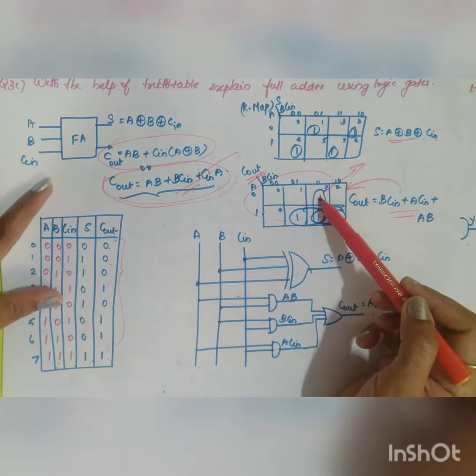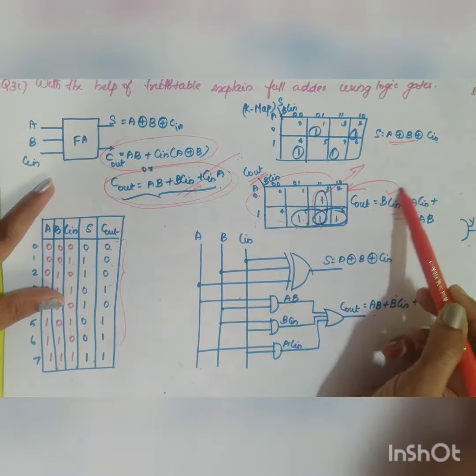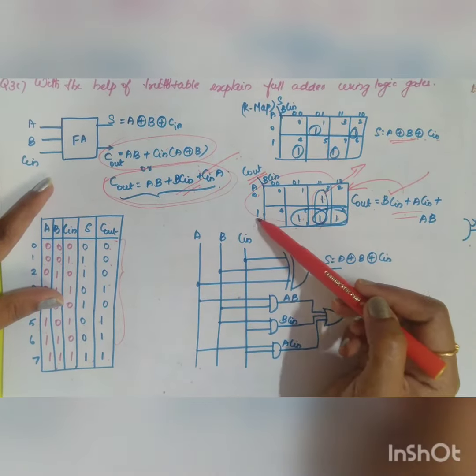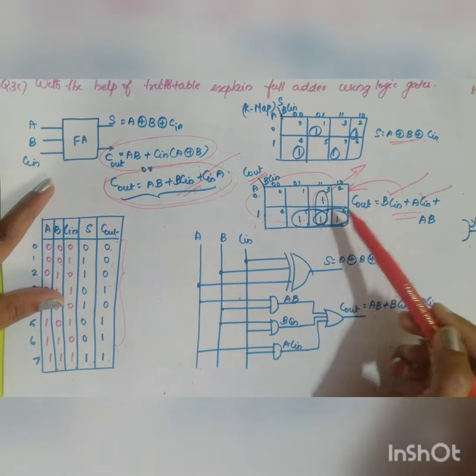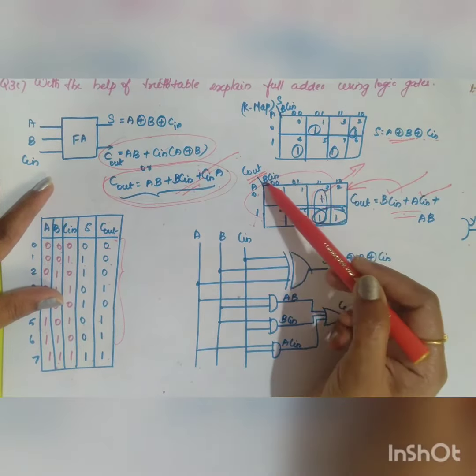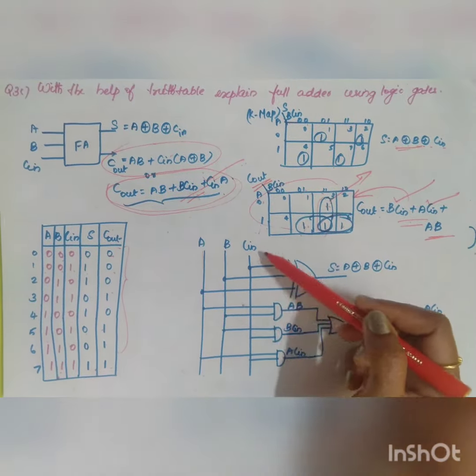What will be this expression? 0, 1 will get cancelled, so here it is B into Cin. Now for this expression, A into Cin. And for this you have A into 1, 1 - so A into B. So you have to connect A, B, Cin.